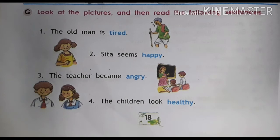Let's see page number 18. Look at the pictures here — there are several pictures on this page. The question says: look at the pictures and then read the following sentences. The first sentence: the old man is tired. There is an old man with a stick in his hand — he is tired, written in blue color. Number two: Sita seems happy. Sita is a happy girl in the picture.